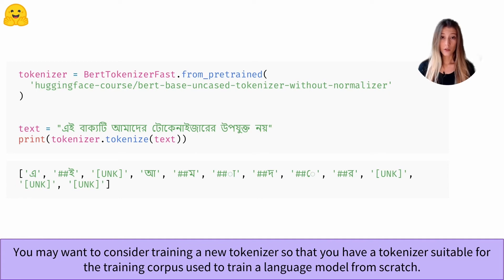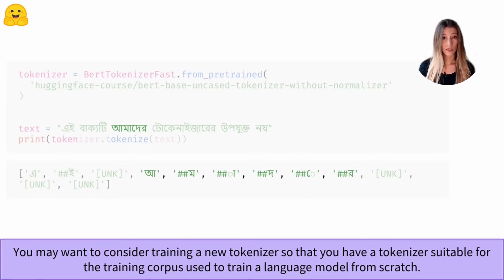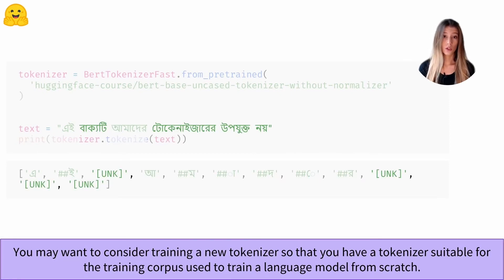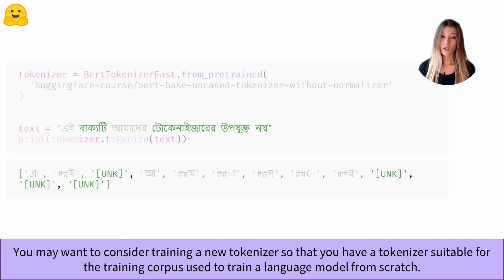On the other hand, if I use the same tokenizer on a sentence in Bengali, we see that either a word is divided into many sub-tokens, or the tokenizer does not know one of the Unicode characters and returns only an unknown token. A common word being split into many sub-tokens can be problematic because language models can only handle sequences of limited length, and excessive splitting may impact model performance.